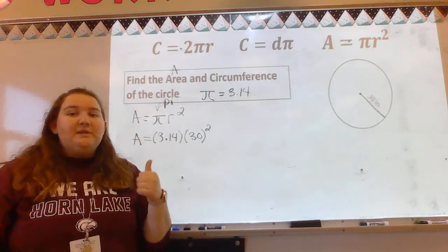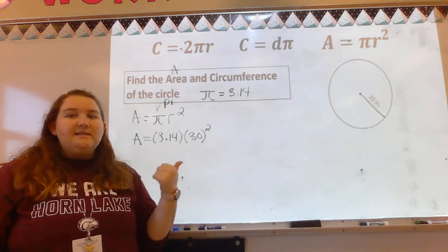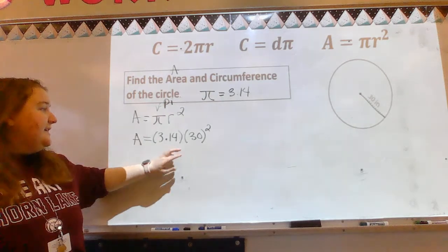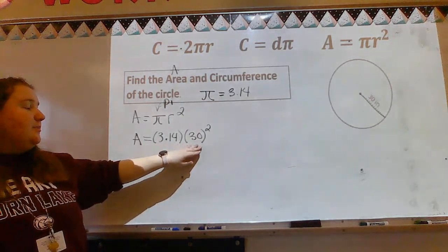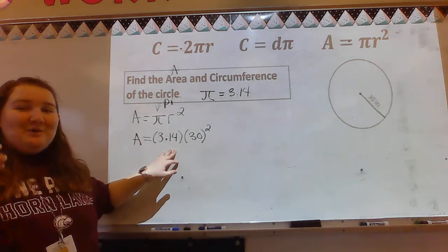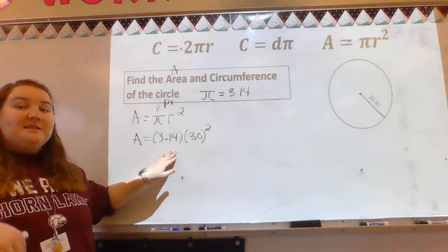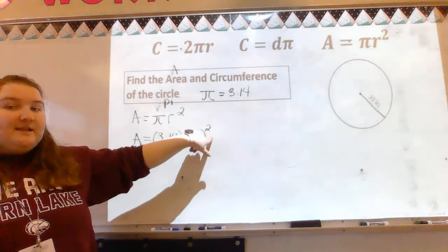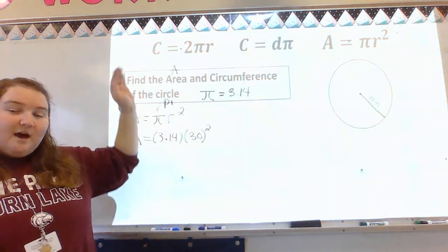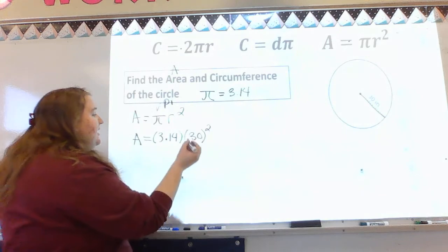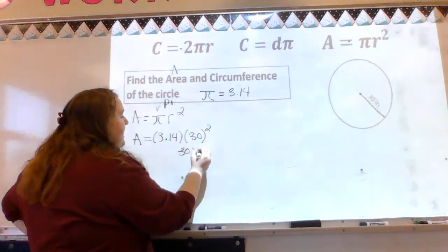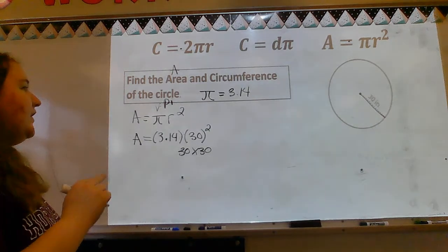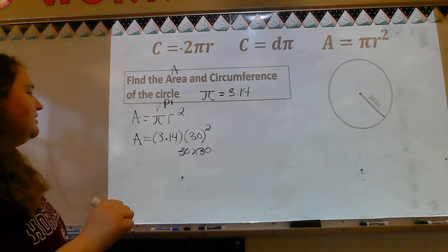You've got to go order of operations — please excuse my dear Aunt Sally. Parentheses, exponents, multiplication, division, add, subtract. Exponents come next, so we're going to do 30 squared first. On the side here, I'm going to do 30 times 30. If you do 30 times 30, you get 900. So now area equals 3.14 times 900.